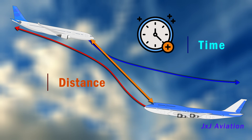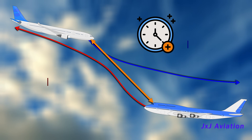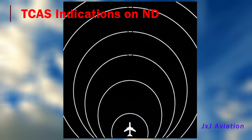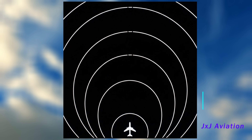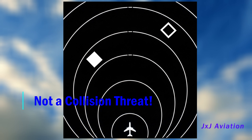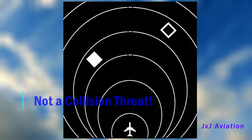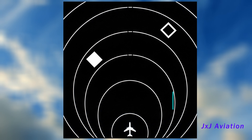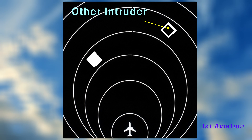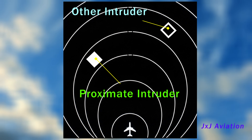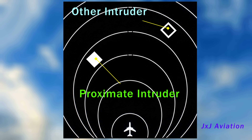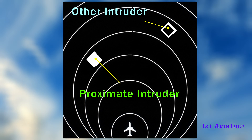Let's look at the TCAS indications. If the system detects that the other aircraft is not a collision threat, it is shown as a hollow white diamond, called Other Intruder, or a filled white diamond, called Proximate Intruder. These are aircraft that the system is monitoring, and no actions are to be taken.